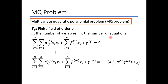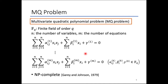This is the definition of the multivariate quadratic polynomial problem, which is called the MQ problem. Given a quadratic polynomial system of M equations in N variables over the finite field of order Q, this MQ problem asks to find a solution of this system. This problem is proven to be NP-complete, and hence is considered to be secure against quantum attackers.